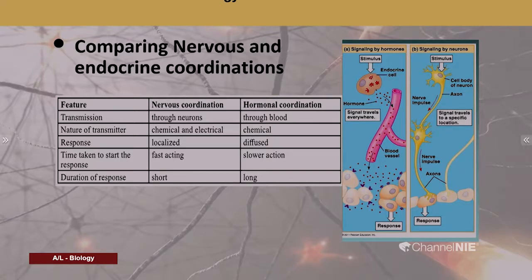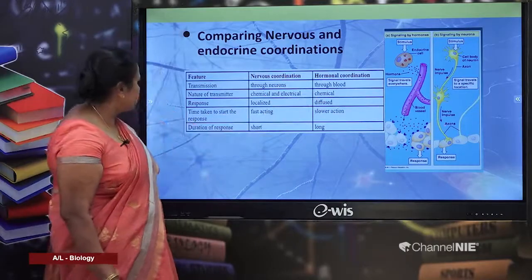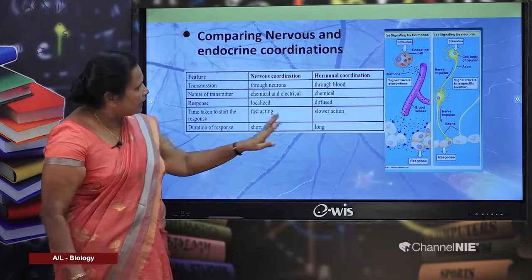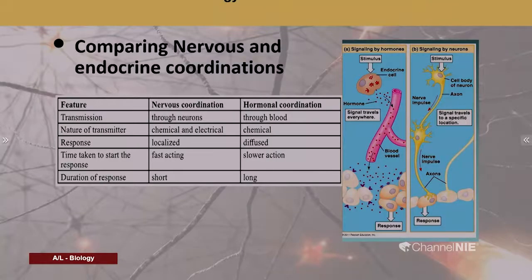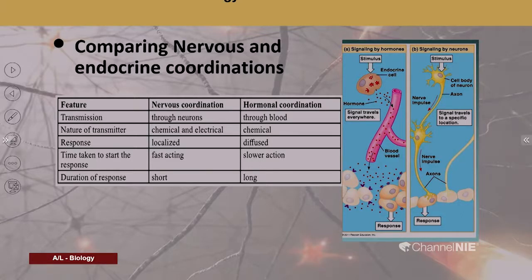The nature of the transmitter in nervous coordination is an electrical impulse, though chemicals are used at certain synaptic gaps. In hormonal coordination, transmission is completely chemical. The response in nervous coordination can be localized to one particular area, whereas in endocrine coordination the response is diffuse, happening throughout the body. The pathway of signaling differs significantly between these two systems.